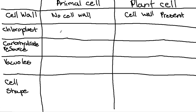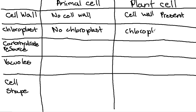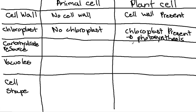So in our table: no chloroplasts in animal cells, and chloroplasts are present in plant cells for photosynthesis. Chloroplasts are also what makes leaves green, so that's how you know chloroplasts are present.